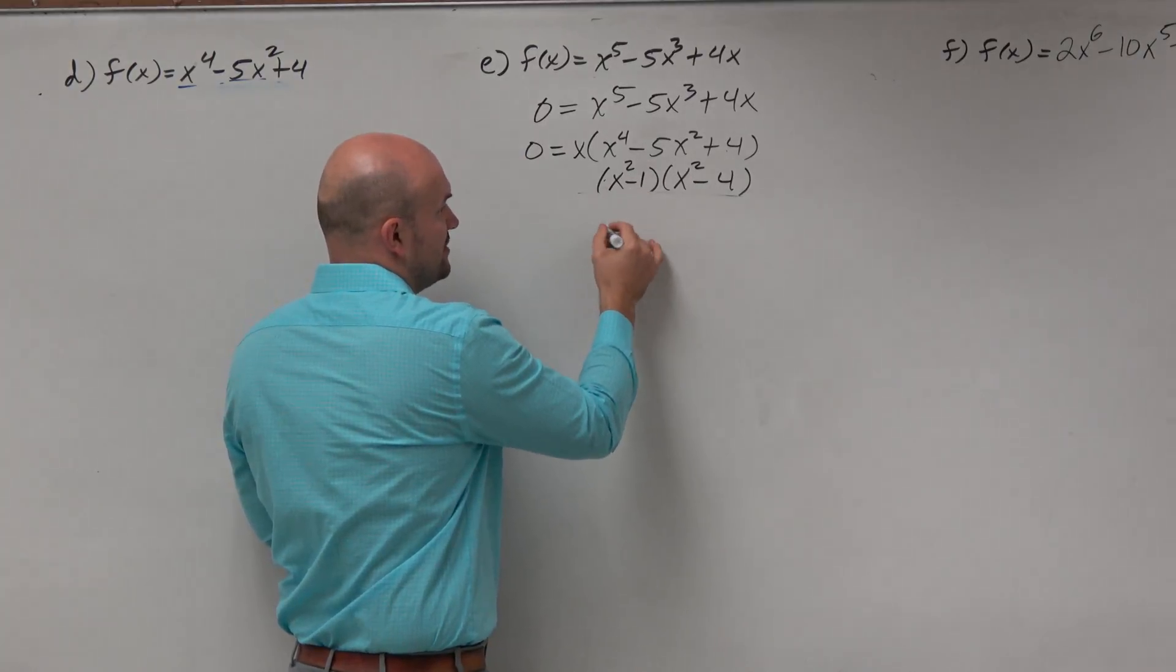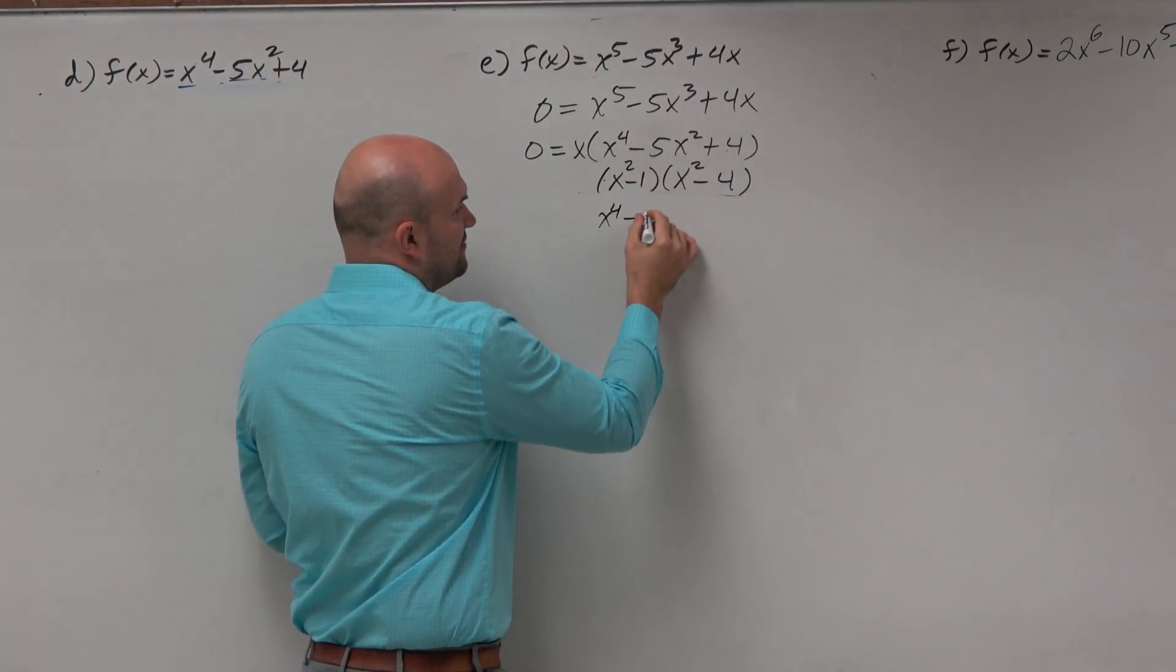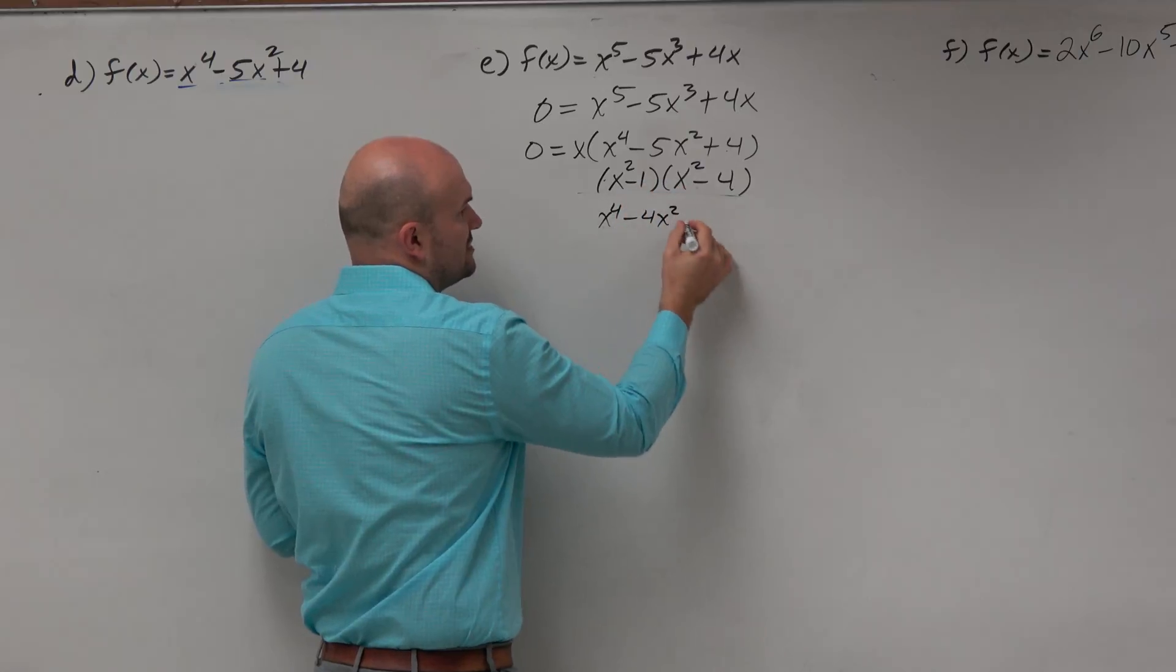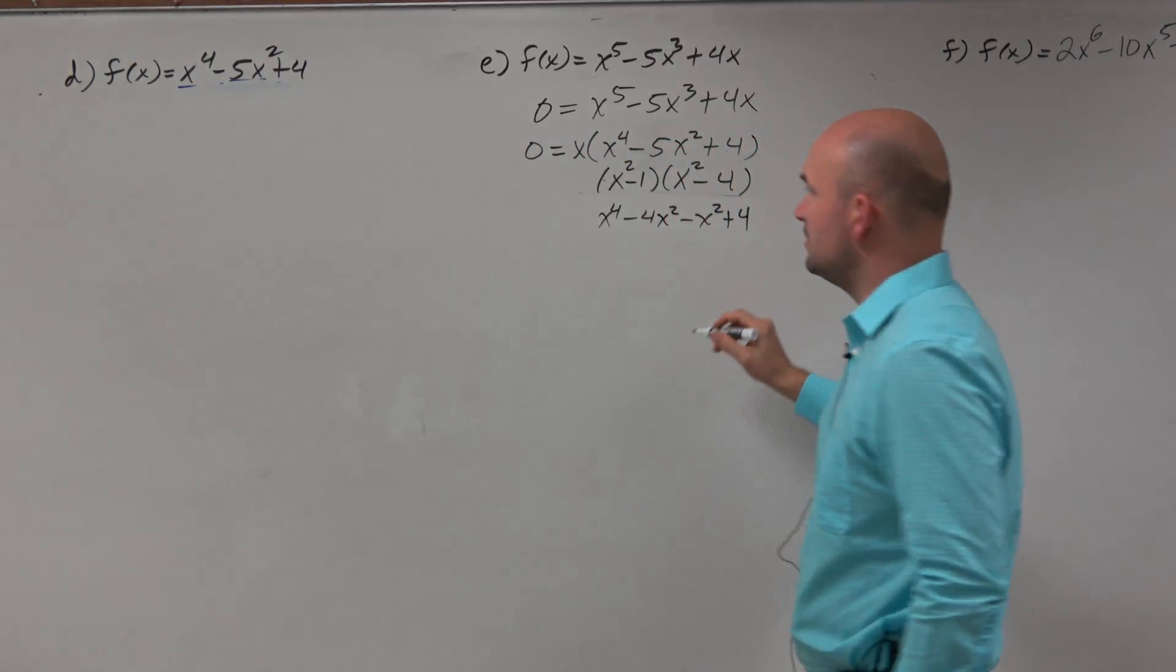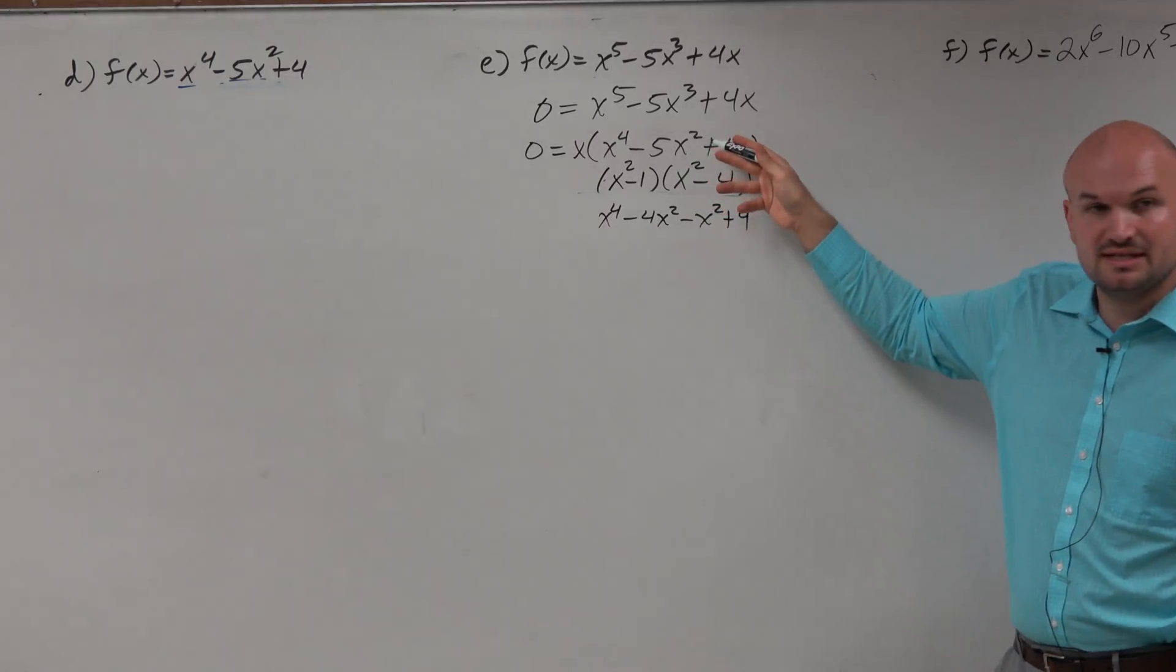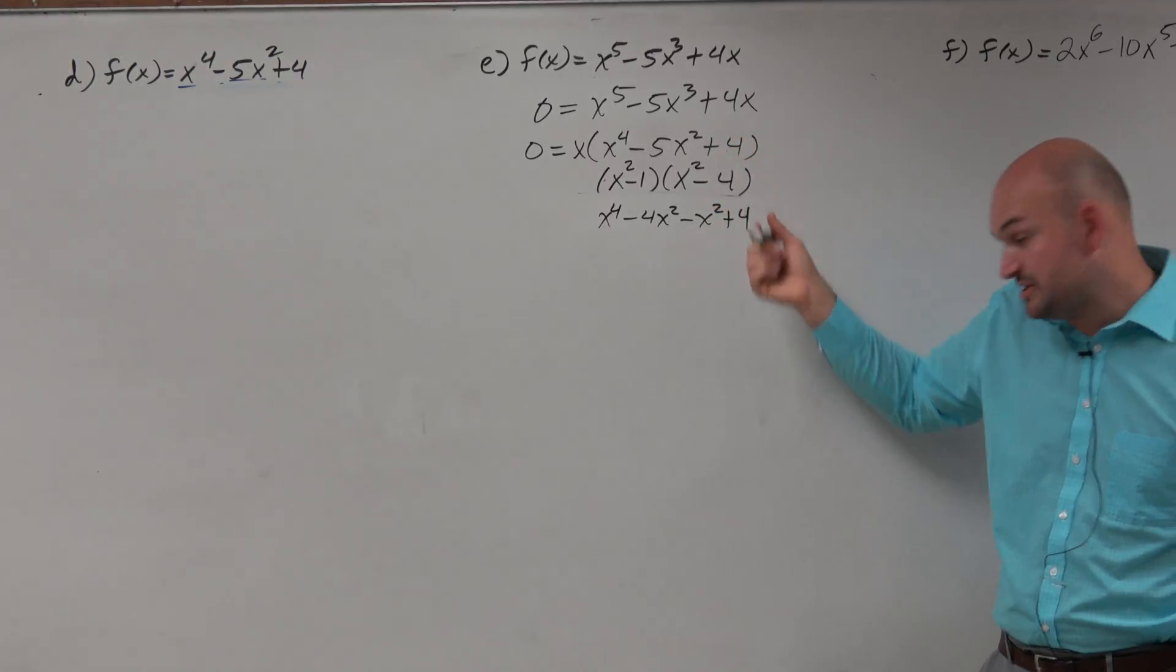Let's do this. x squared times x squared is x to the fourth. x times negative 4x is negative 4x squared. Negative 1 times x is negative x squared. Negative 1 times negative 4 is positive 4. Do you guys see how this combines to give you that problem? Right? So we just factored it. Sweet.